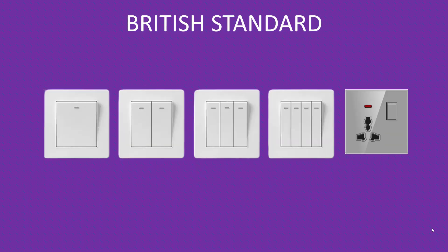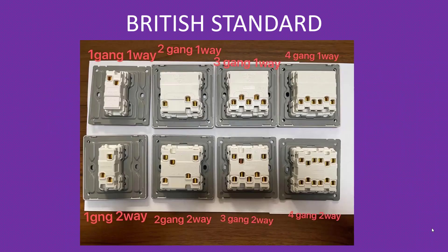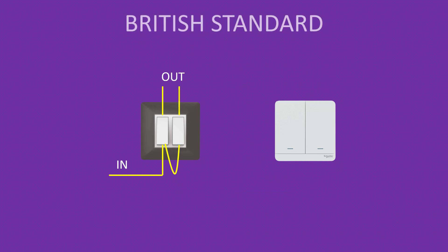If you look at the switchboard carefully, you can see the boxes are square — 86mm by 86mm. We call these gangs. One switch is called one gang, two switches is called two gang, three switches is called three gang, and four switches is four gang. The socket is a switched socket — the switch and socket are together, so there is already a switch along with the socket. If you look at the back portion of the switches, you don't need to wire the switch separately as in Indian standard installations — it is already factory fabricated and interconnected.